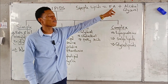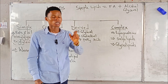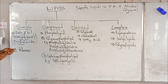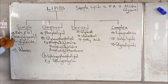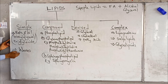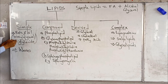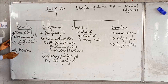Simple lipids contain fatty acid and alcohol. The two types of simple lipids we have are fat and oil, and waxes. Fat and oil are our triglycerol — if you don't call it triglycerol, you call it triglyceride. Then there are waxes.